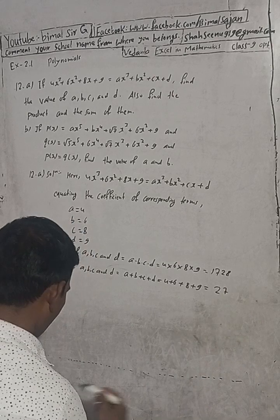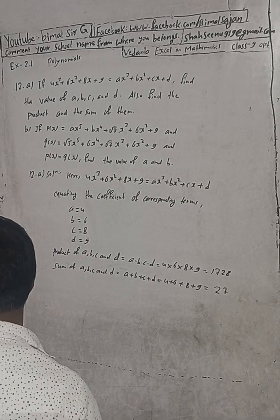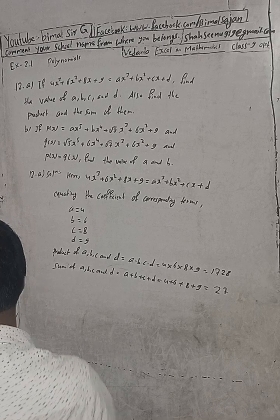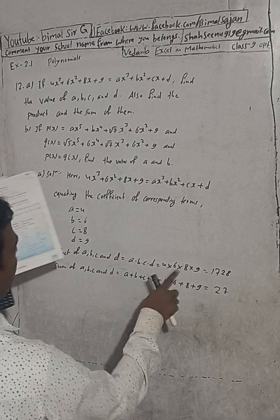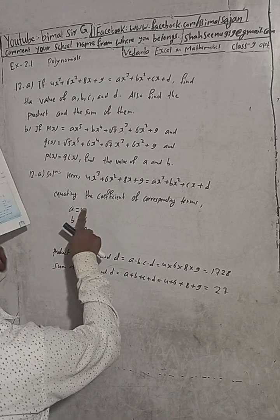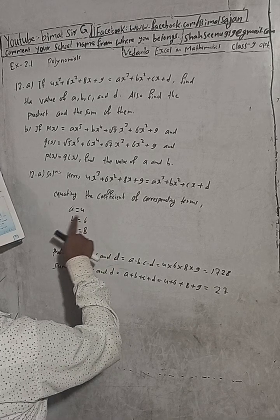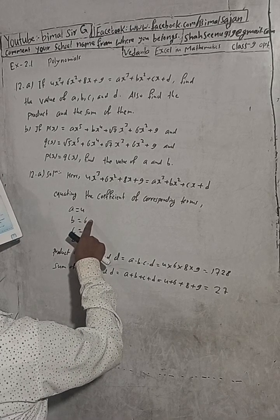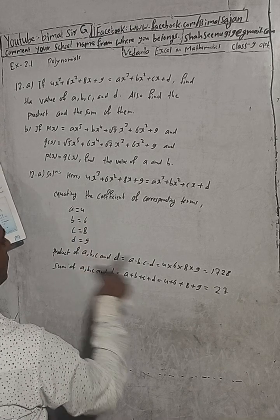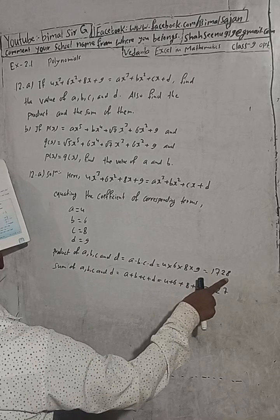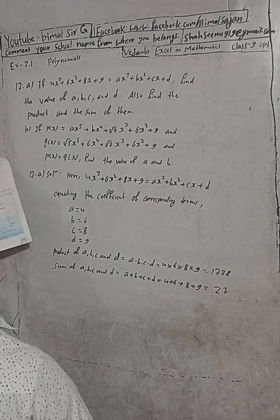Let me check the book answer for question 12a. The answer is: a = 4, b = 6, c = 8, d = 9, product = 1728, and sum = 27. This is the correct answer.